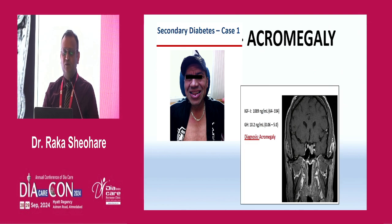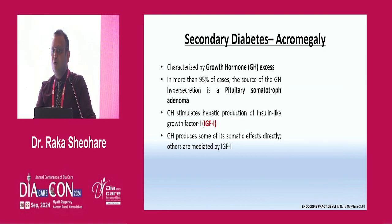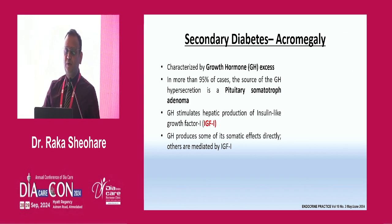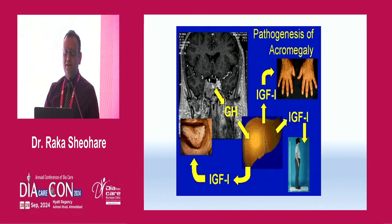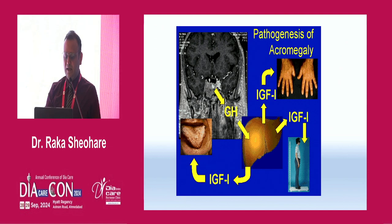Why does this happen? In acromegaly, characterized by the growth hormone axis, excess growth hormone is mostly associated with a pituitary somatotroph adenoma, which stimulates hepatic production of insulin-like growth factor. The complications of acral enlargement and other features are due to this IGF-1. Growth hormone produces some somatic effects directly and some mediated by IGF-1. The growth hormone axis translates to hepatic factors, which then release IGF-1. IGF-1 is the main driver of acromegaly's pathogenesis.